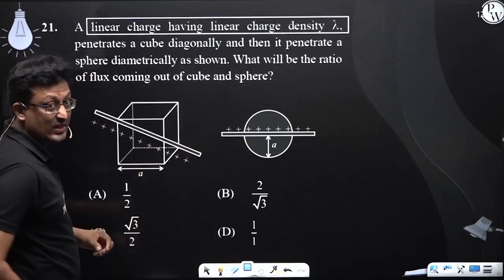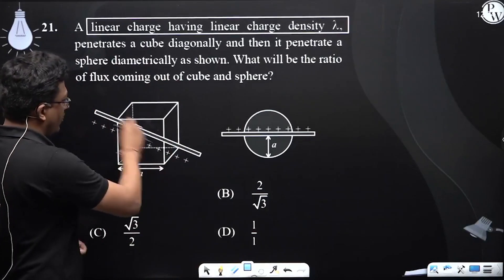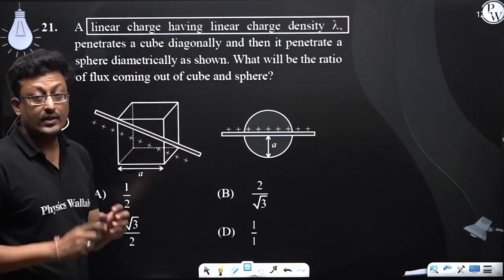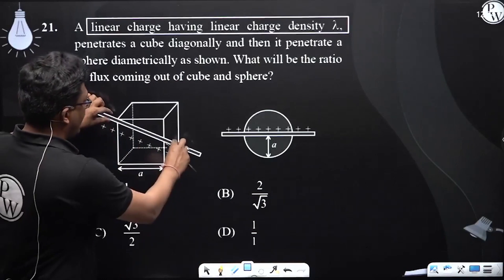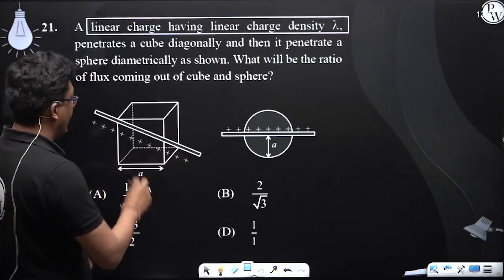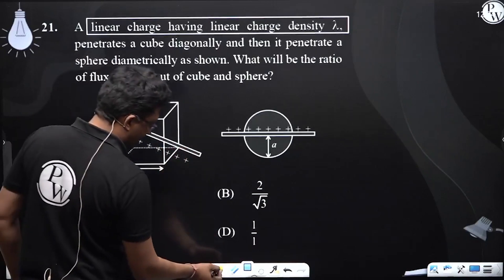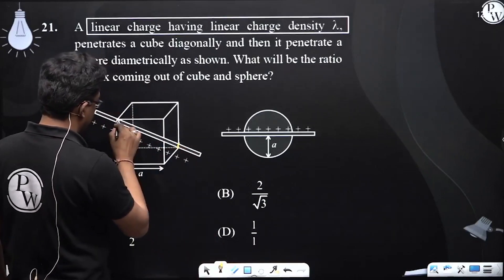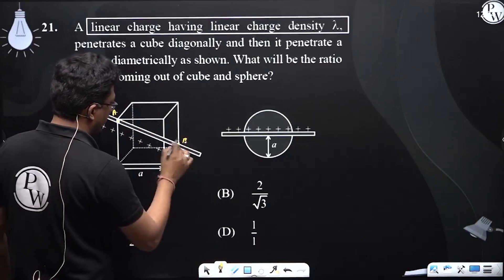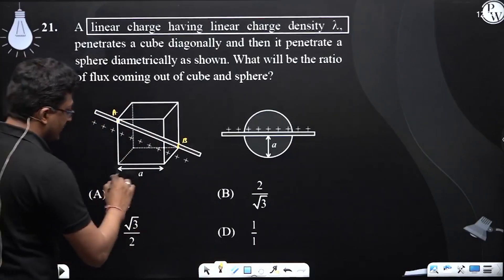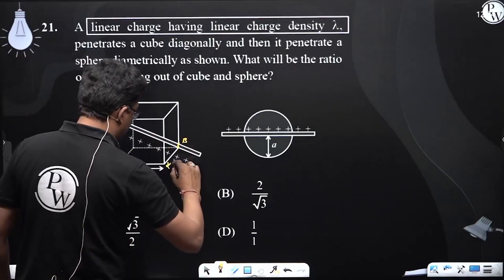Now see, because this rod linear charge density is diagonally opposite vertices, this time we will take diagonal length. We will take this point to this point. Now this is a, this is a.